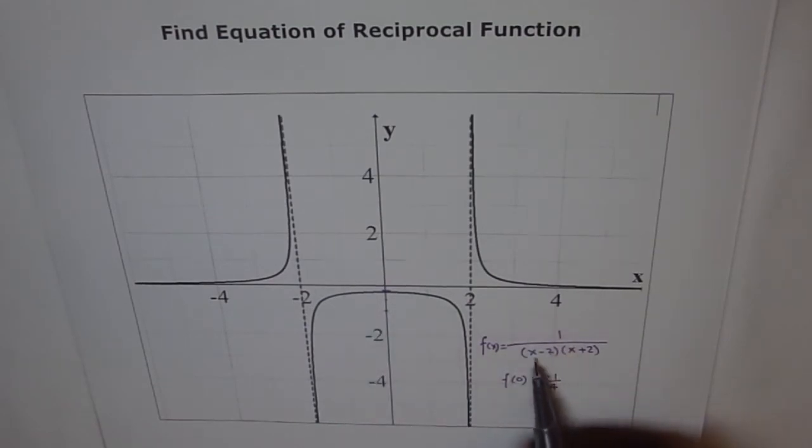Similarly, if I take minus 1, then also this is negative and this is still positive. Negative times positive is negative. Therefore, this part is also perfect.